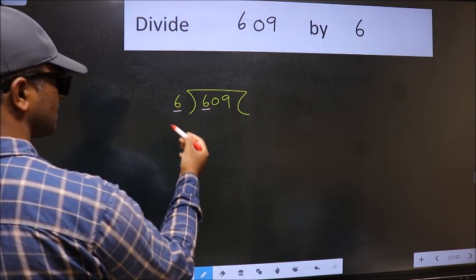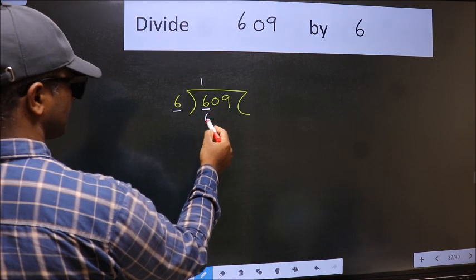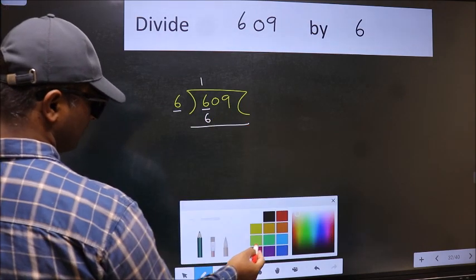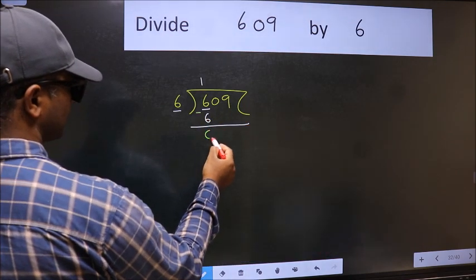When do we get 6 in 6 table? 6 once 6. Now we should subtract. We get 0.